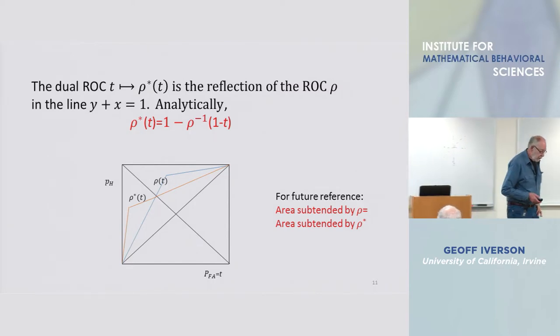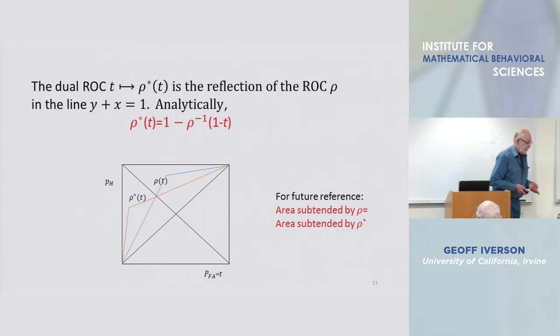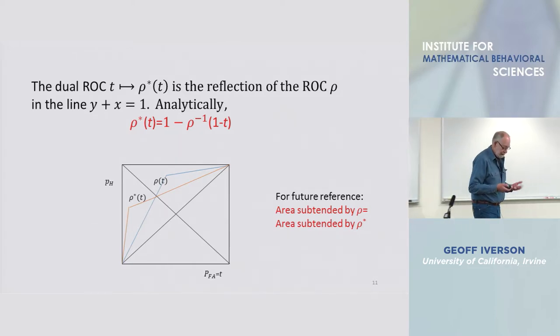A very common parametric model involves a distribution for signal and noise that are related simply by a shift, by a change of location.